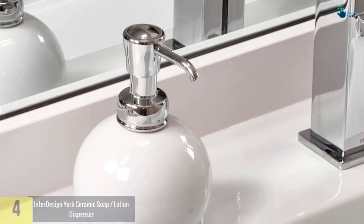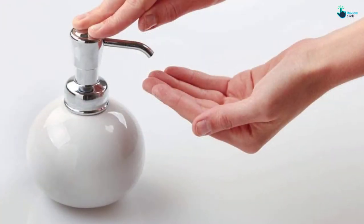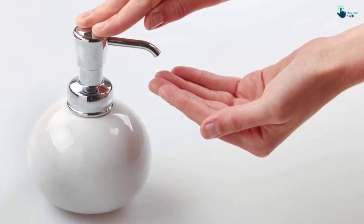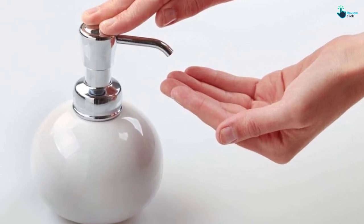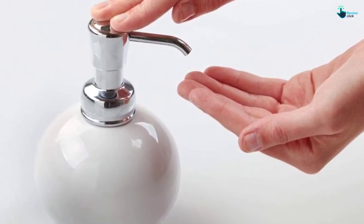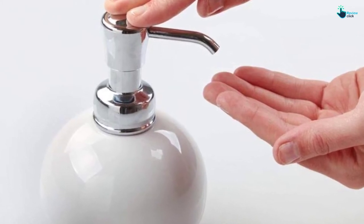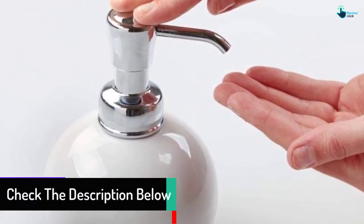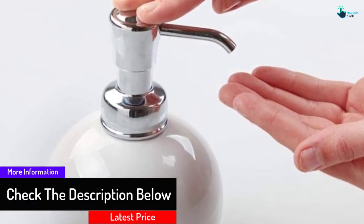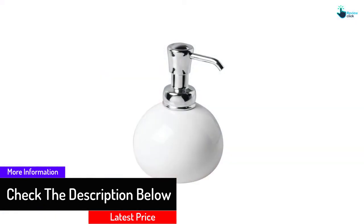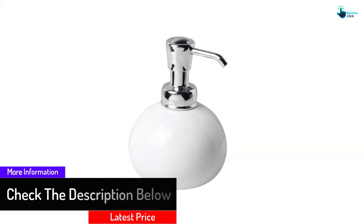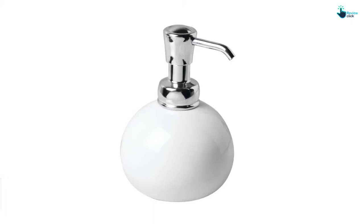The soap, lotion and shampoo dispenser comes in a round shape and has a capacity of 10 ounces. It features a solid and stable steel base, elegant chrome finished plastic head, and a nicely designed ceramic body. The wide mouth makes refilling easy and convenient and occupies minimal space courtesy of its 3.8 by 3.8 by 5.3 inch dimension.